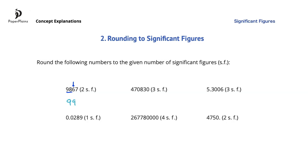A common mistake here is to leave this number as 99, assuming that the 6 and the 7 become non-significant numbers, so they can simply be omitted. However, it clearly doesn't make sense to round a number that is close to 10,000 down to 99. So instead of the 6 and the 7 disappearing, they simply become zeros at the end of the number, because these zeros are not significant.